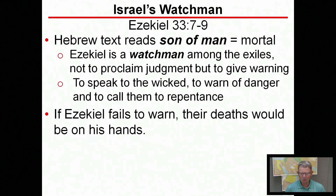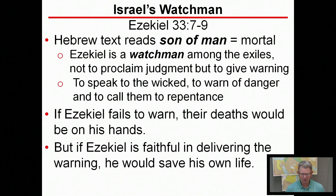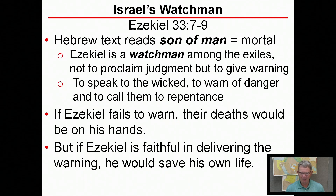The text says if Ezekiel fails to warn the people, their deaths would be on his hands — quite a responsibility. He's not just an innocent bystander; he is involved almost to the death. If he doesn't fulfill the calling of God, their deaths will be attributable to him. But if Ezekiel is faithful in delivering the warning, his own life will be spared. It requires Ezekiel to be an active participant, not a casual bystander.